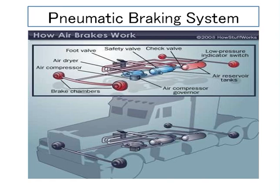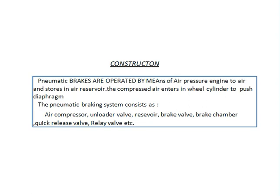Pneumatic braking system. This is a schematic diagram of the pneumatic braking system, showing the air compressor governor, brake chambers, air compressor, air dryer, foot valve, safety valve, check valve, and low pressure indicator switch. Pneumatic brakes are operated by means of air pressure compressed into and stored in an air reservoir. The compressed air enters the wheel cylinder to push the diaphragm. The pneumatic braking system consists of air compressor, unloader valve, reservoir, brake valve, brake chamber, quick release valve and relay valve.